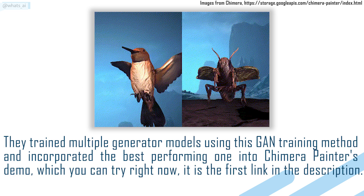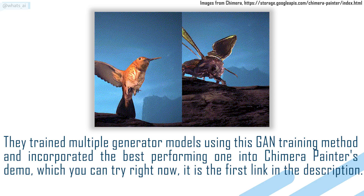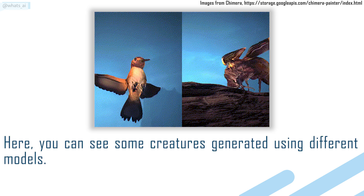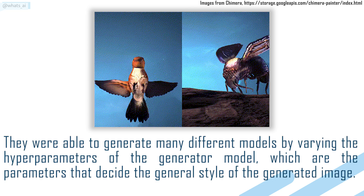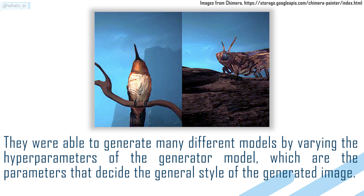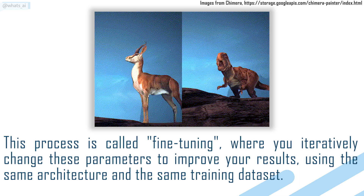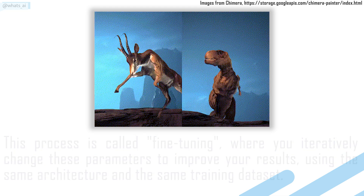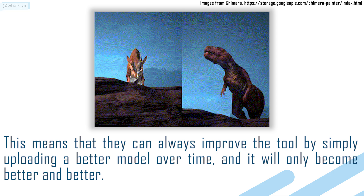They trained multiple Generator models using this GAN training method, and incorporated the best performing one into Chimera Painter's demo, which you can try right now — it is the first link in the description. You can see some creatures generated using different models. The best model was decided from artists' feedback. They were able to generate many different models by varying the hyperparameters of the Generator model, which are the parameters that decide the general style of the generated image. This process is called fine-tuning, where you iteratively change these parameters to improve your results, using the same architecture and the same training dataset. This means that they can always improve the tool by simply uploading a better model over time, and it will only become better and better.